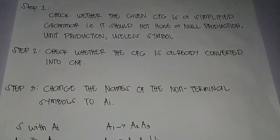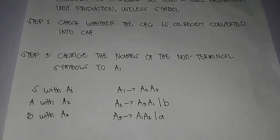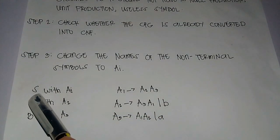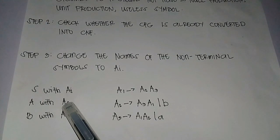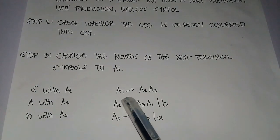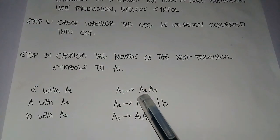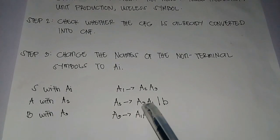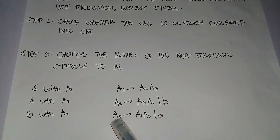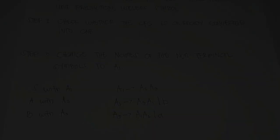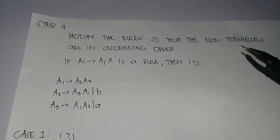Step 3: Change the name of the non-terminal symbols to Ai. Rewrite the grammar and simply replace S with A1, A with A2, and B with A3. This is the new grammar form: A1 goes to A2 A3, and A2 goes to A3 A1 and B.